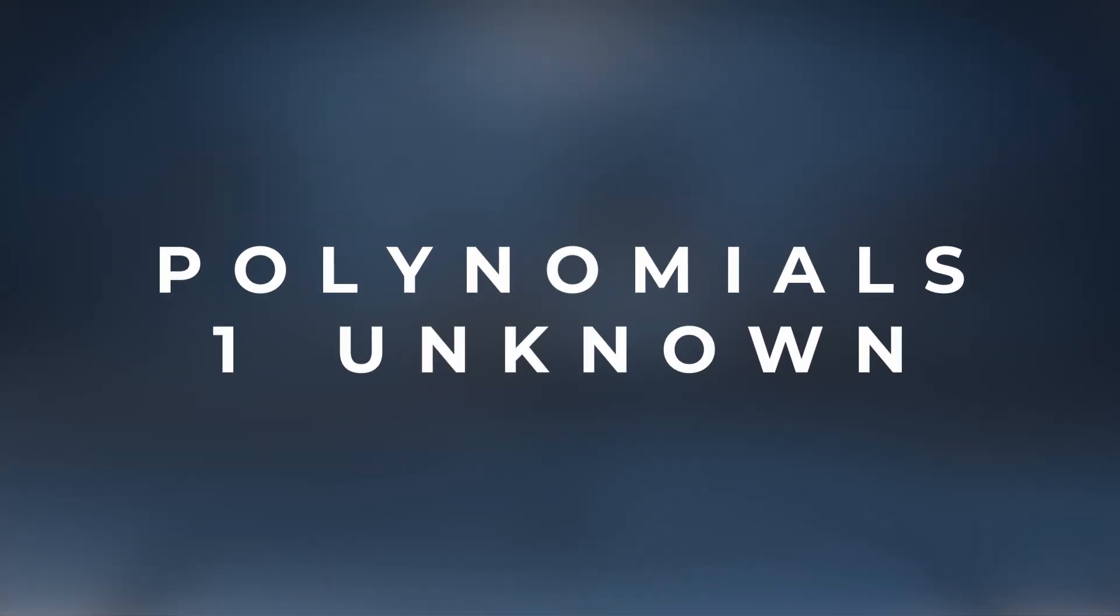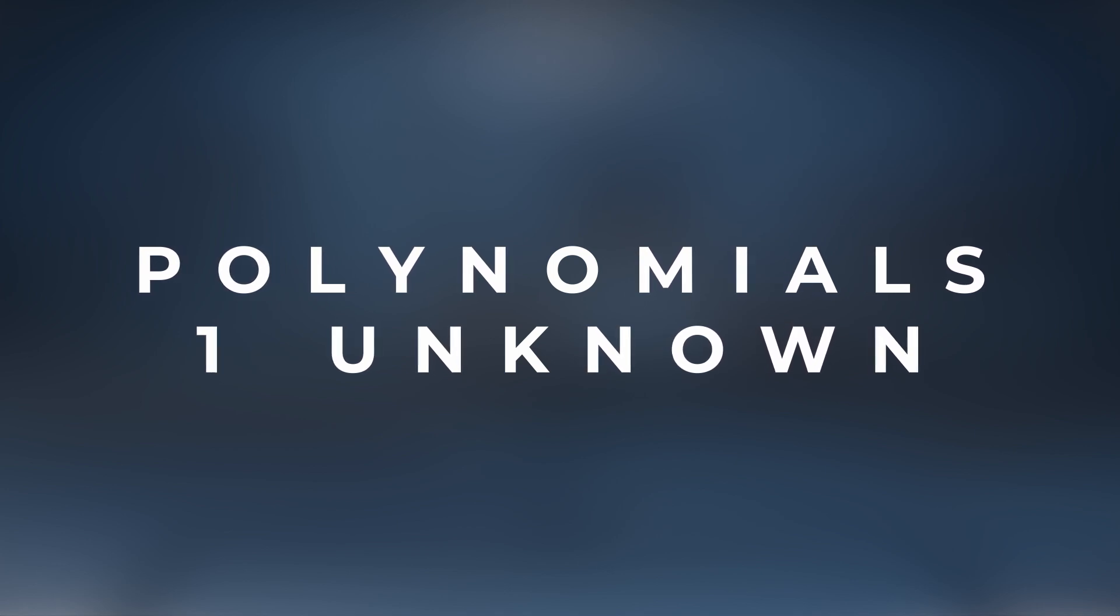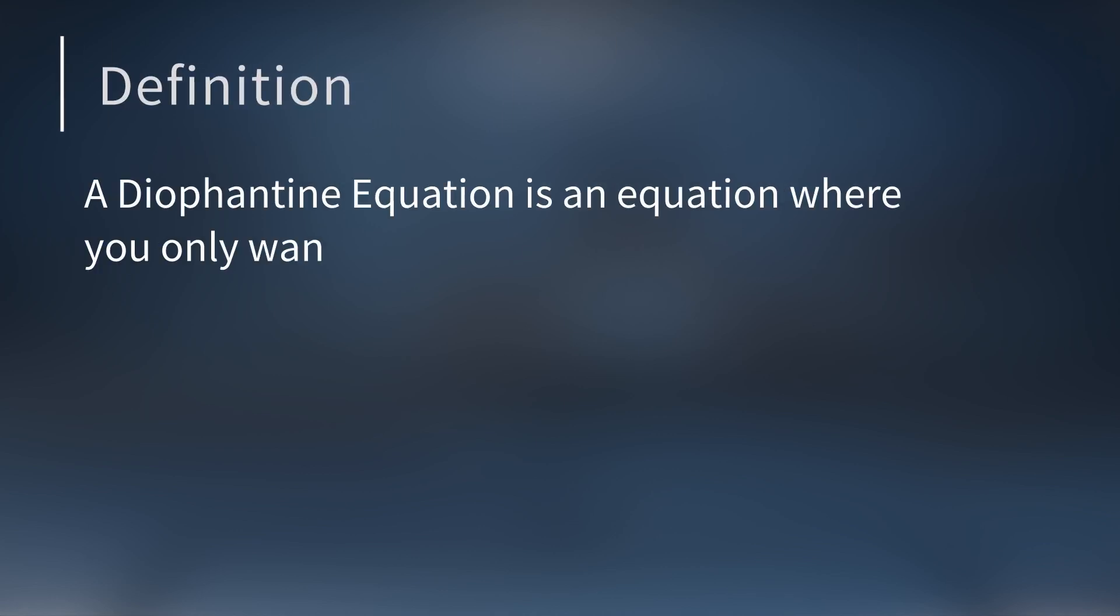Today we are going to learn how to solve a specific type of Diophantine equation: polynomials with one unknown. A Diophantine equation is an equation where you are only interested in finding the integer solutions. You aren't interested in the real number or complex number solutions. You just want to find the whole number solutions, if there are any.